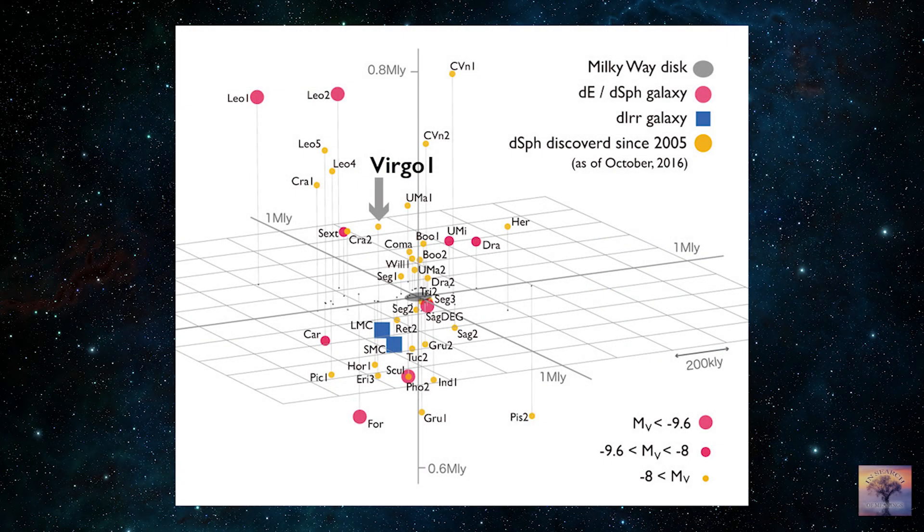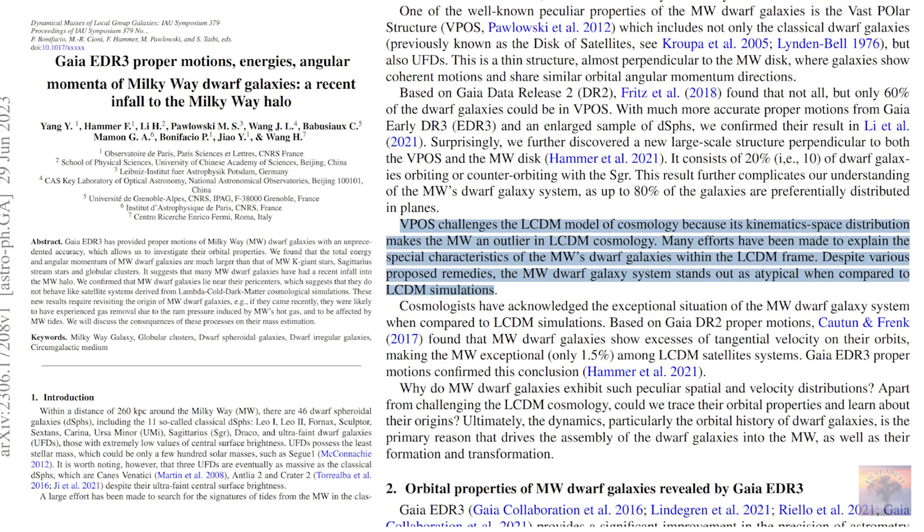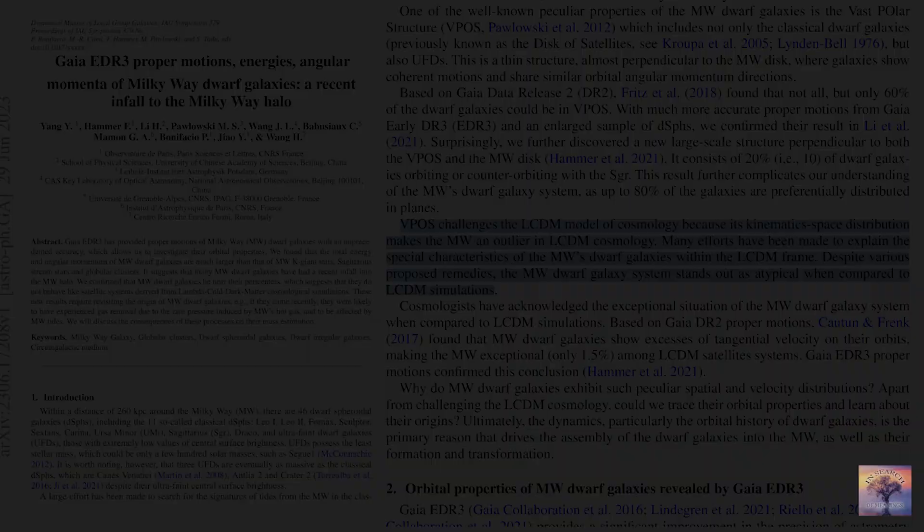For several decades now, astronomers have been haunted by a certain feature of the location of dwarf galaxies, satellites of our galaxy. And for them, the most disturbing thing about this issue is that such an orderly arrangement contradicts the Lambda-CDM cosmology.